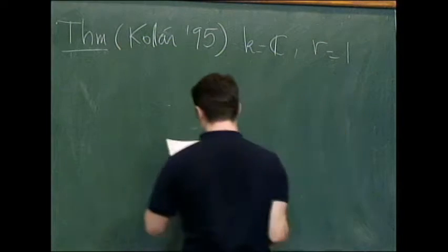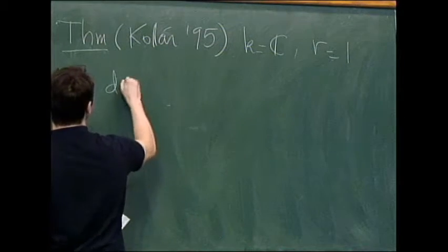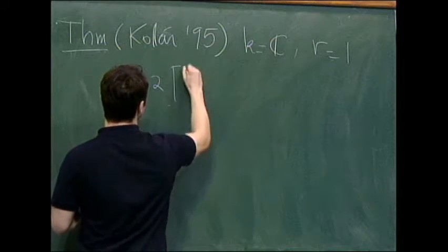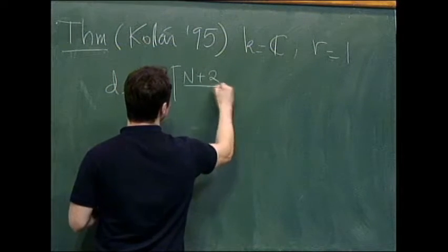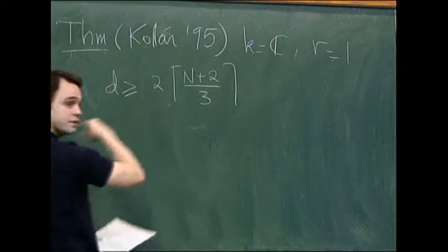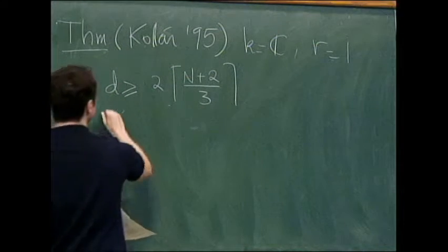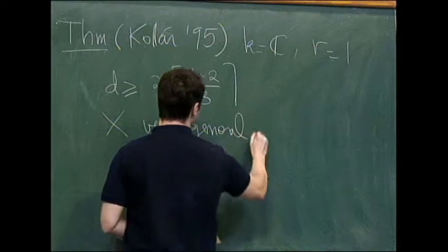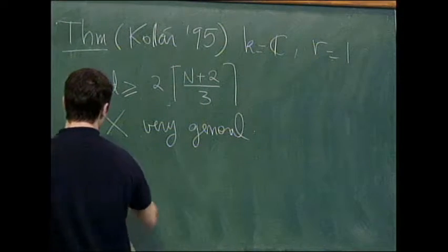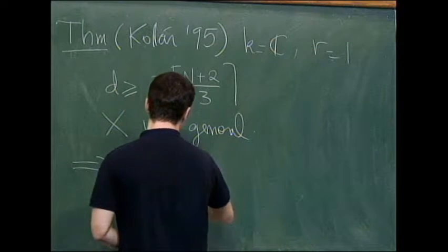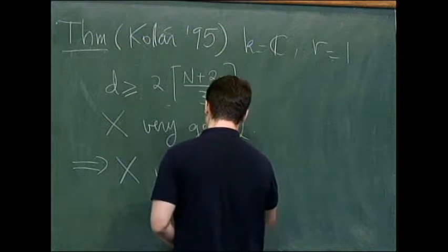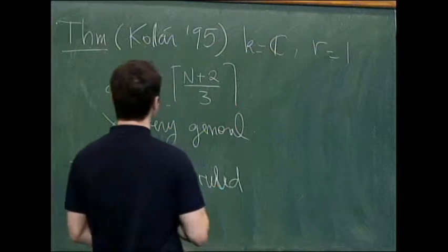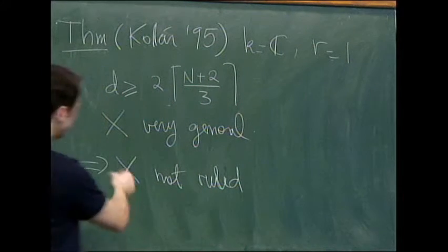And he showed that when the field is that of the complex numbers, and you have one equation, and if the degree of the hypersurface is at least twice of this thing, so it's roughly three, two-thirds of N, and if the hypersurface is very general, then it is not ruled.